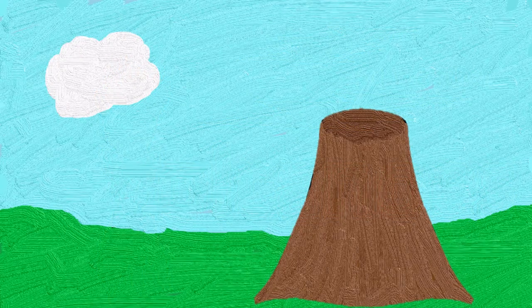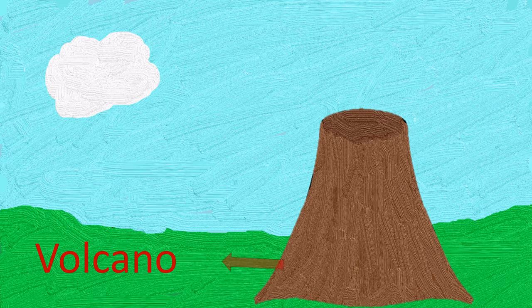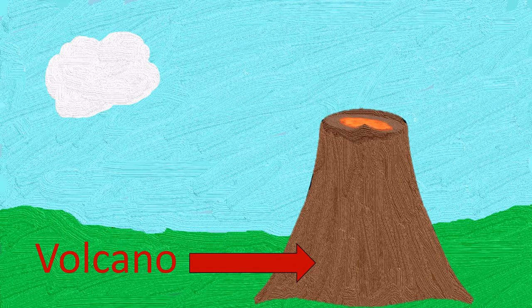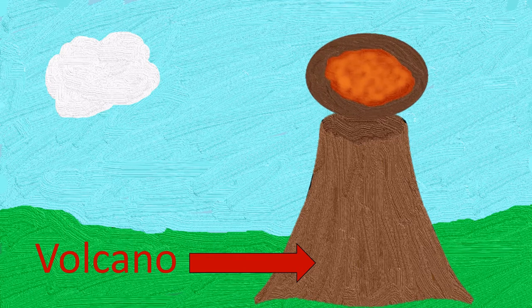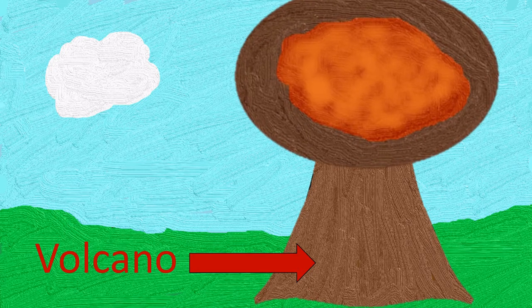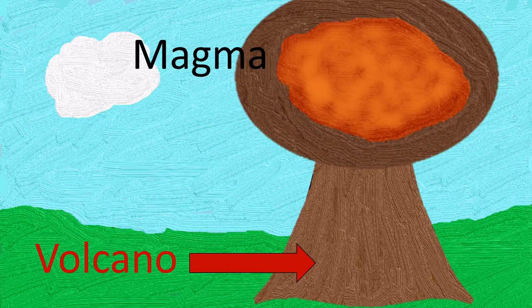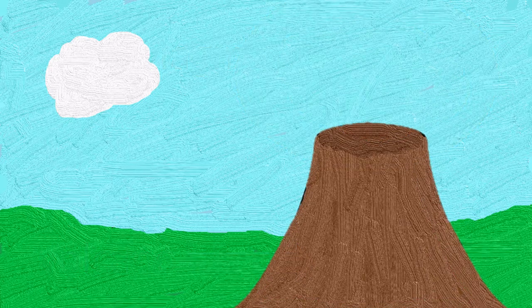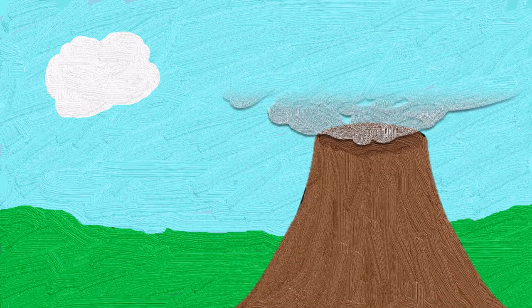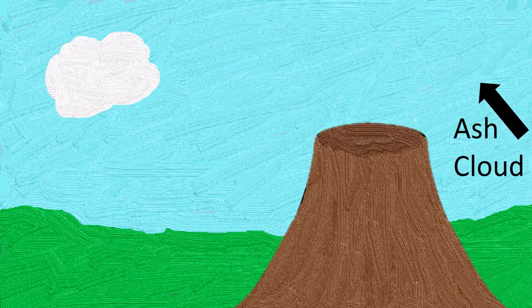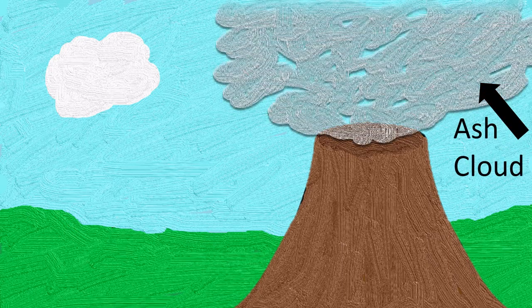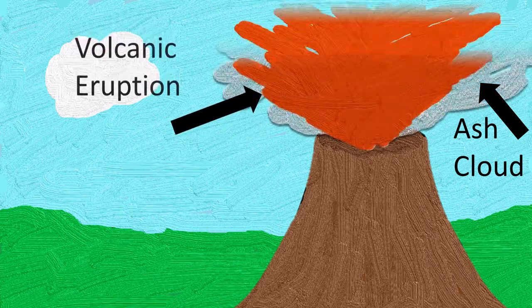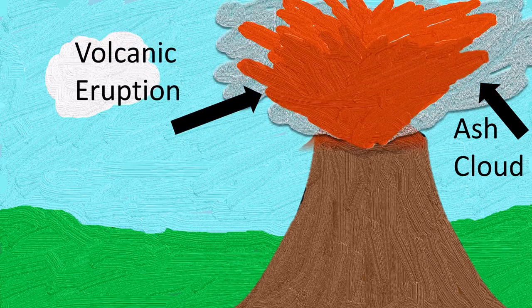A volcano is an opening into the earth. If we could look inside a volcano, way deep inside, we could see the extremely hot molten rock called magma. The rock is so hot it has melted into a liquid state. The smoke-like ash cloud occurs when there is a violent explosion within the volcano. If the magma also explodes out, this is a volcanic eruption.